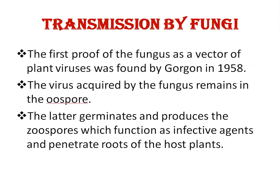Transmission by fungi: the first proof of fungus as a vector of plant viruses was found by Gurgan in 1958. The virus acquired by the fungus remains in the oospore, which is a thick-walled sexual spore that develops from a fertilized oosphere. When oospores germinate, they produce zoospores, which are motile asexual spores that function as infective agents and penetrate the roots of fresh host plants.